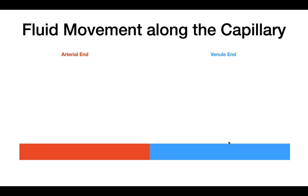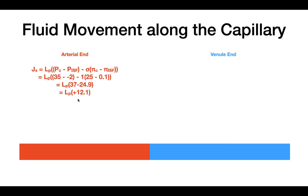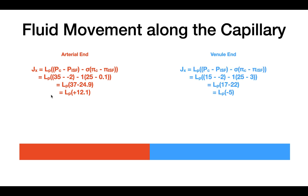Now, putting these two ideas together — how does this determine how fluid is going to flow along the length of the capillary? At the arterial end, when you put the values into the Starling equation, you would see that the flux is going to be around plus 12.1. So the flux is positive at the arterial end.